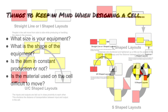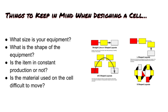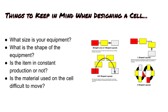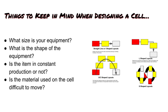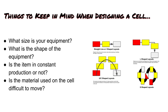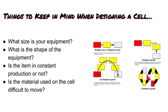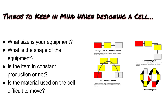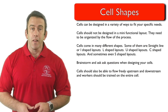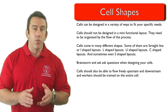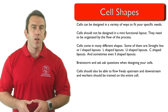Some things to keep in mind when designing your cells are: what size and shape is your equipment, is the item in constant production or not, and is the material used on the cell difficult to move? Cells should be able to flow freely upstream and downstream, and workers should be trained on the entire cell.